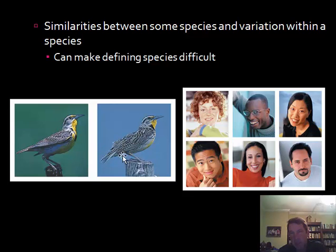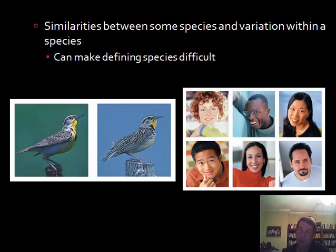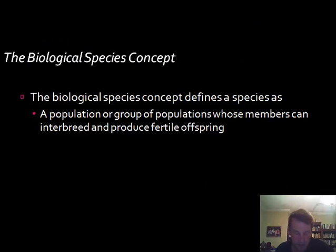We also have the other case where there's a lot of variation within the same species. Humans are an example — we're all the same species and can produce fertile offspring, but there's a lot of variation. You can just look around a classroom and see it. So sometimes you have the same species with lots of variation, and sometimes organisms look similar but cannot breed. That's why breeding is the primary grouping concept, but there are problems and exceptions.